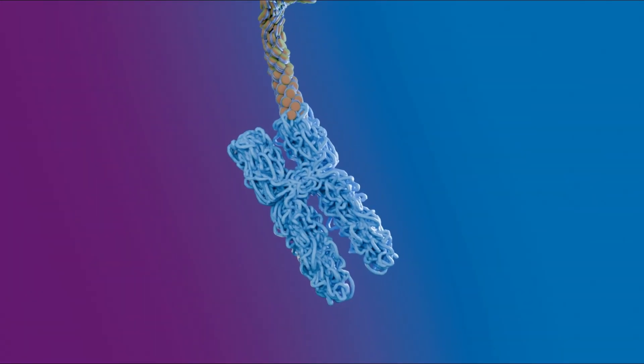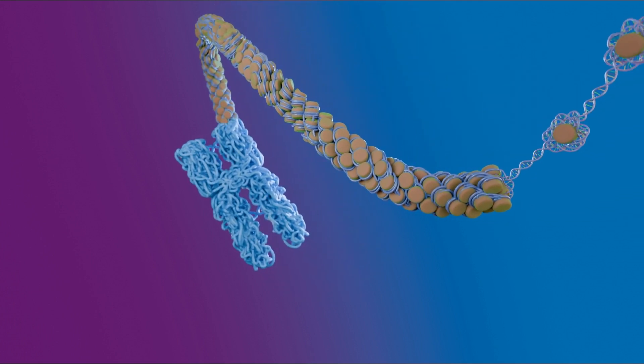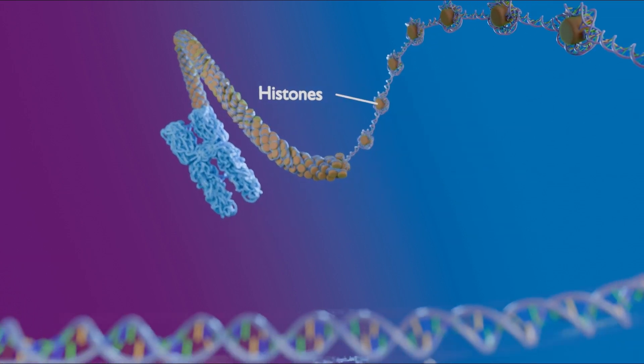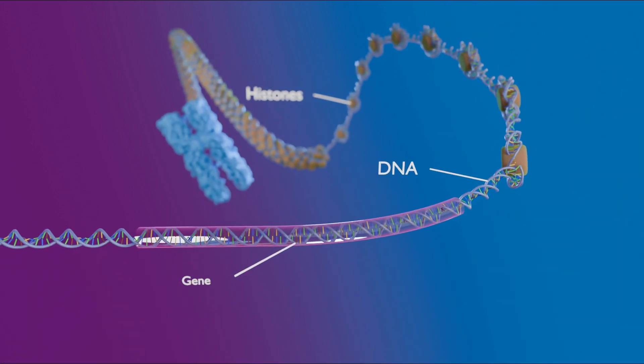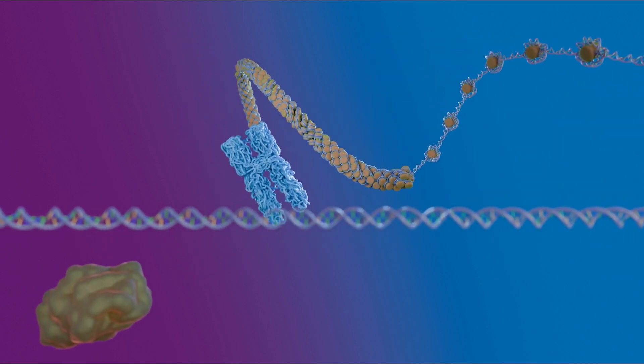Each chromosome contains a long strand of DNA, tightly packaged around proteins called histones. Within the DNA are sections called genes. These genes contain the instructions for making proteins.